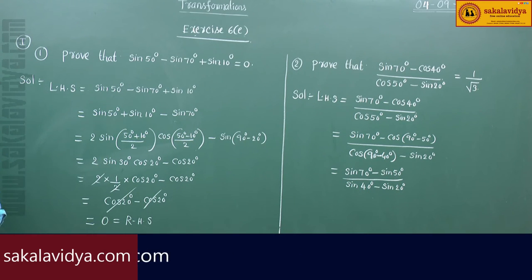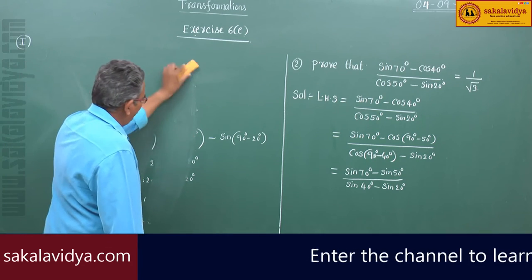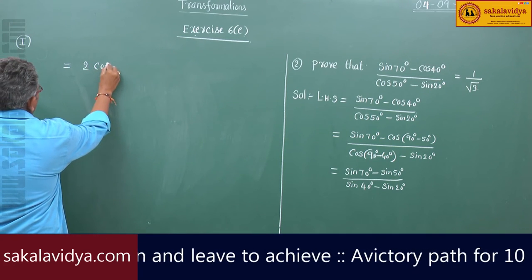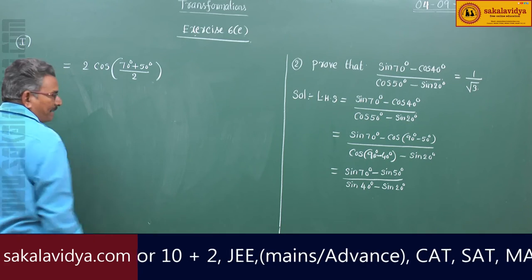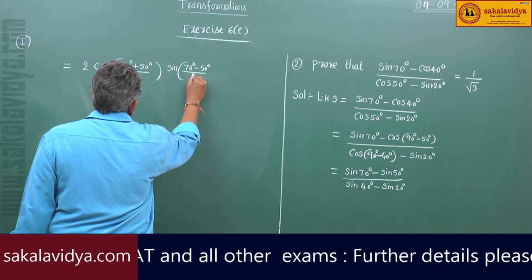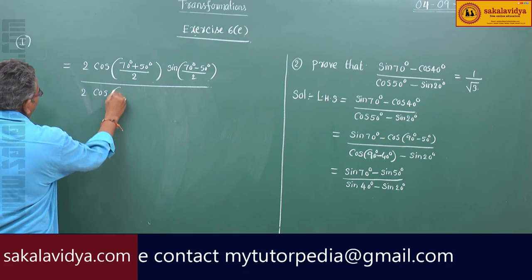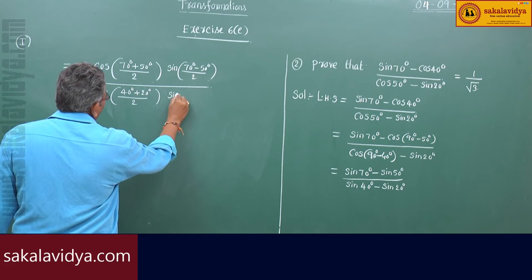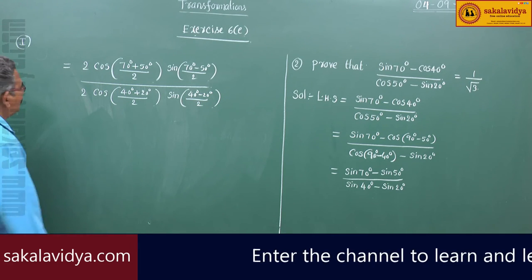Applying sin C minus sin D formula to both numerator and denominator: numerator becomes 2 cos((70°+50°)/2) sin((70°-50°)/2), and denominator becomes 2 cos((40°+20°)/2) sin((40°-20°)/2). The 2s cancel out.